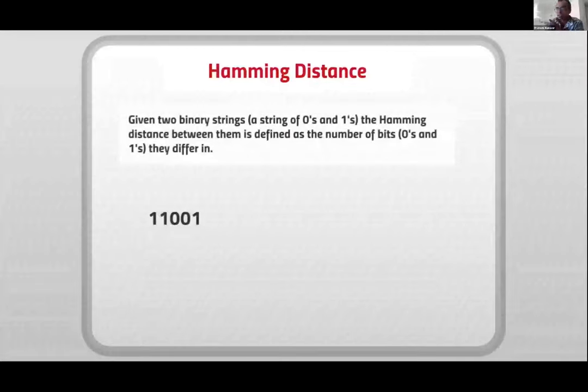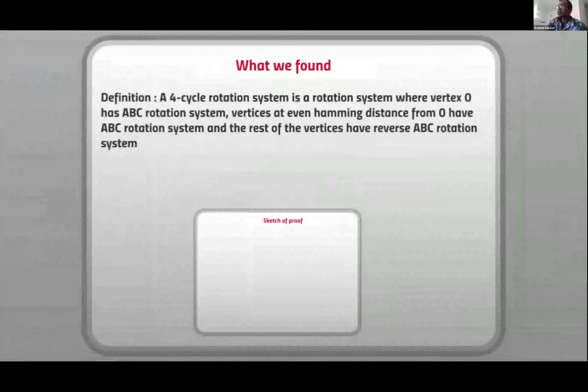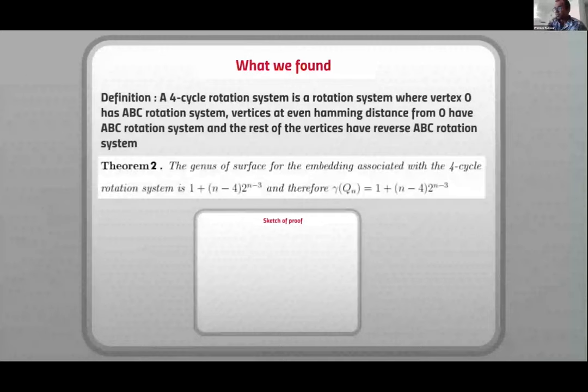Hamming distance is just the difference between two binary strings. What we did was we defined a four-cycle rotation system. You start with any vertex, say vertex 0, give it the ABC rotation system, and then vertices which are at an even Hamming distance from 0 also have the ABC rotation system, but the rest of the vertices, that is all at odd Hamming distance, have the reverse ABC rotation system. It turns out that gives us the minimal embedding.